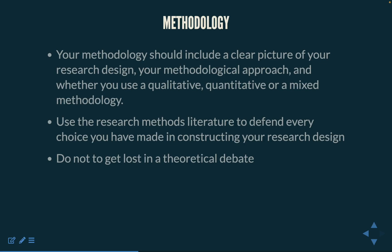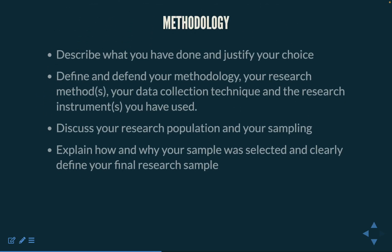In any research, there are always alternatives — you could write a book on the choices available to you. Describe what you have done and justify your choice. You must provide a very clear picture of what you have done, not what you could have done. Define and defend your methodology, your research methods, your data collection techniques, and the research instruments you have used. It helps to place a blank copy of your research instrument in the appendix so that your reader is very clear about its design and content.